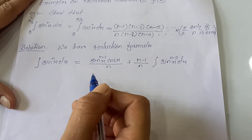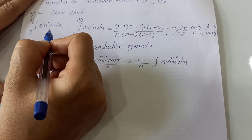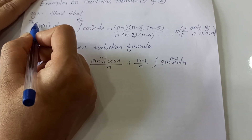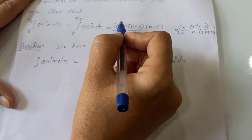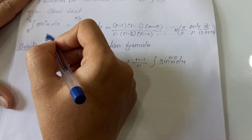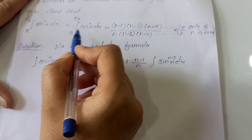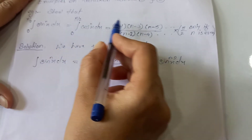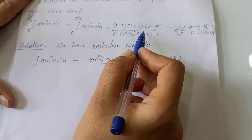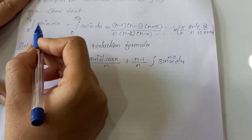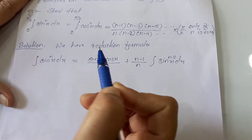Now we will find the solution — let's prove this. So we will start with the integration of sin raised to n of x dx, limits from 0 to pi by 2, and show that this integration equals that fraction. Using the same method you can show that the integration of cos raised to n of x dx from 0 to pi by 2 equals the same fraction.